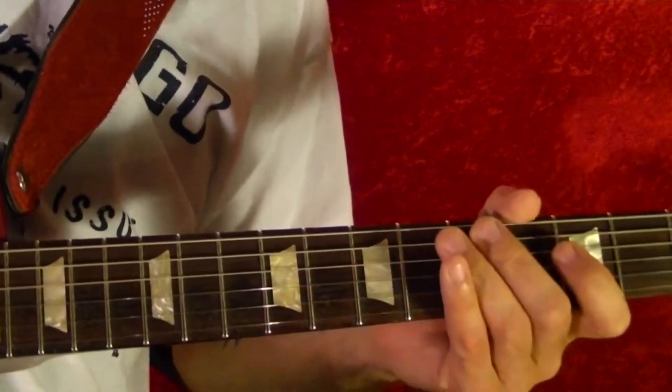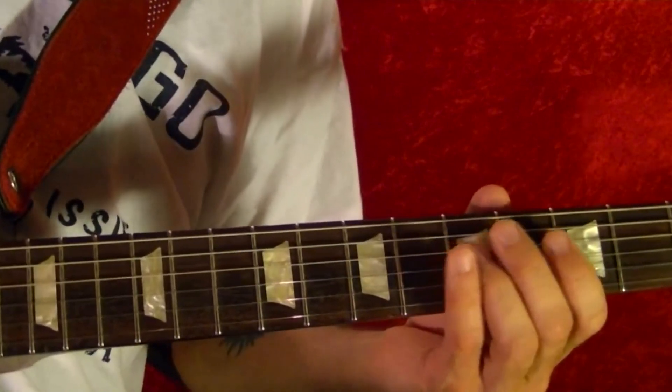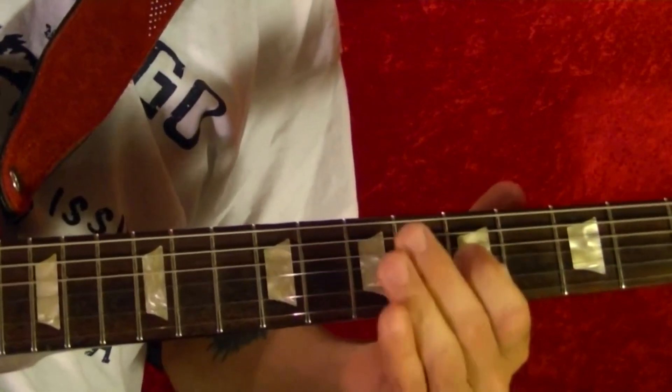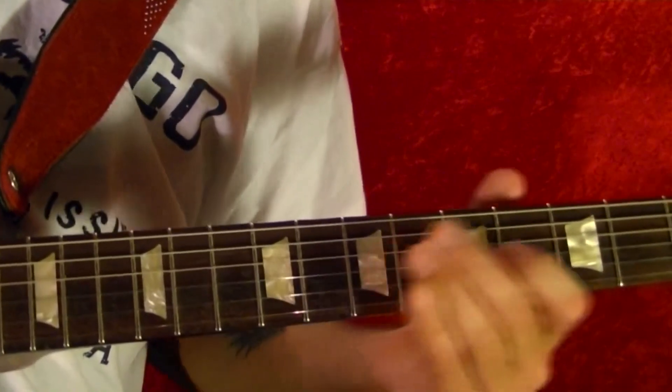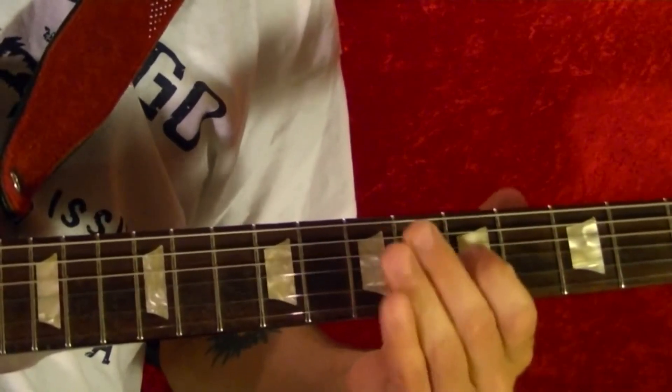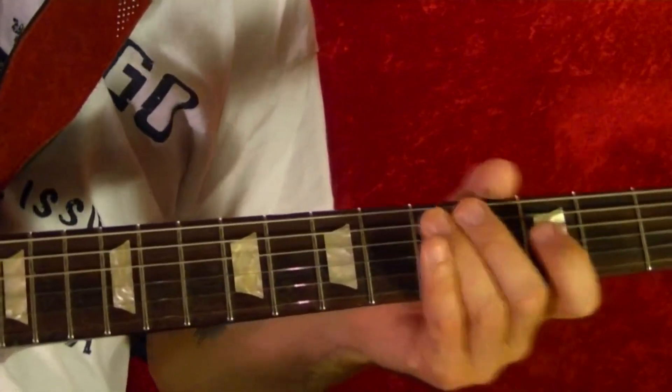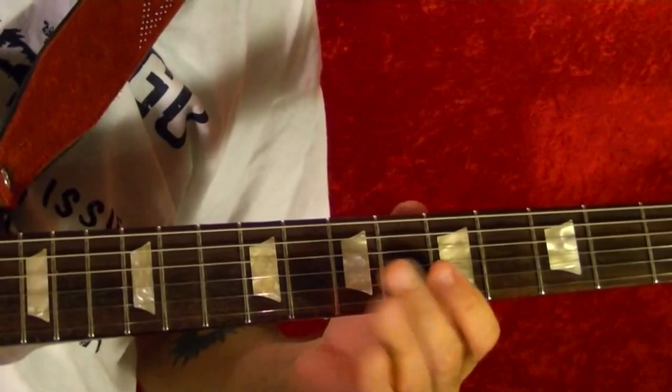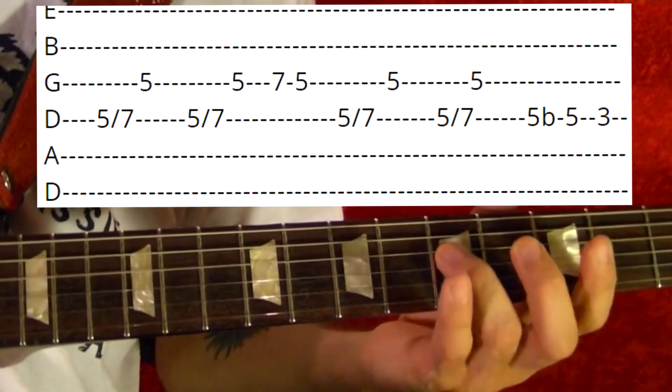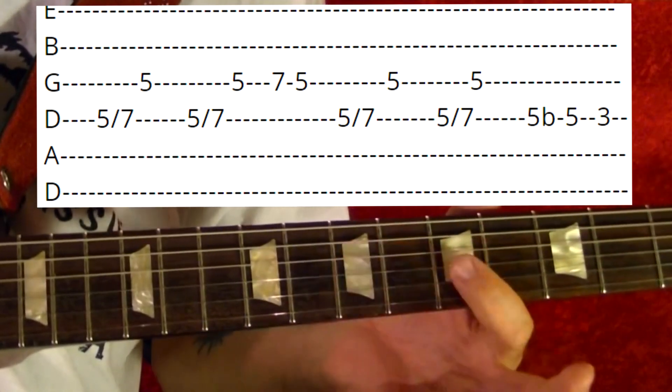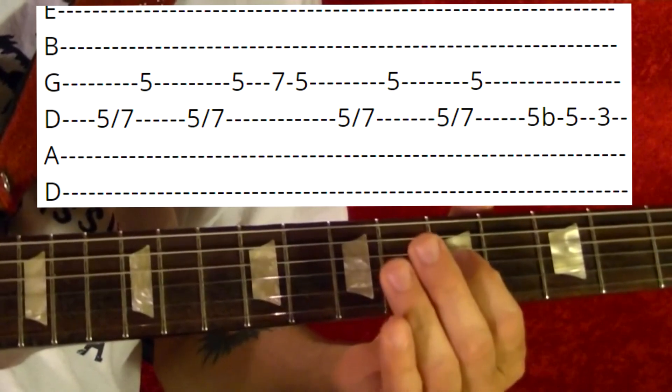Then the bridge, the middle bit, the slide guitar bit. I'll play it first. Okay, so it's the fourth string fifth fret, slide up to the seventh, third string fifth fret. Do that again.